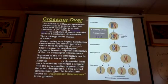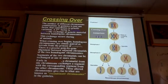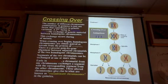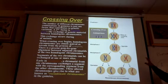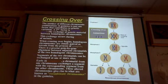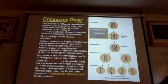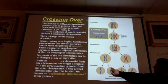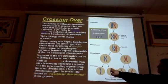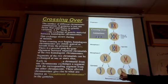Is it possible for crossing over not to occur? This does not always occur. What would happen if that happened? Well, if that happens, then you get all — this would be an all-blue one, and this would be an all-red one.